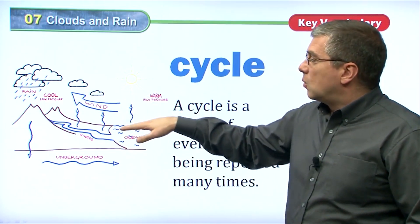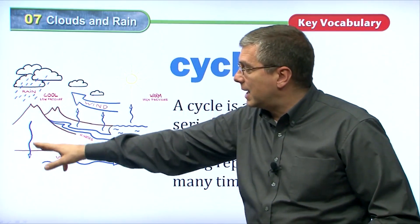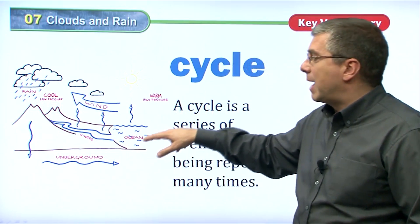It gets warm, the water moves up into the atmosphere, it cools down, it comes down as rain, it goes underground, and back into the ocean.